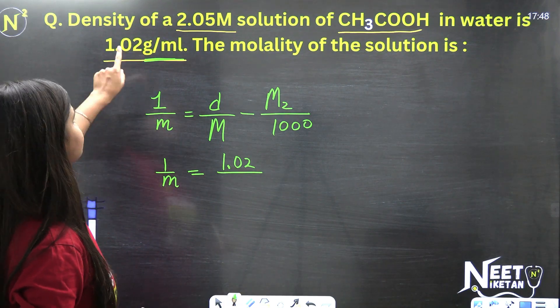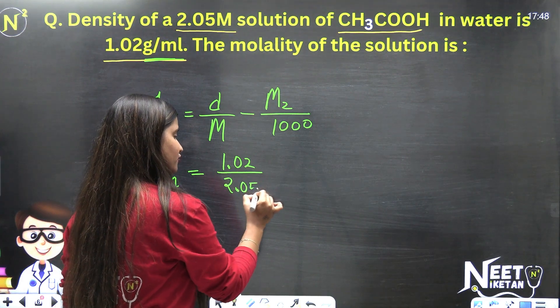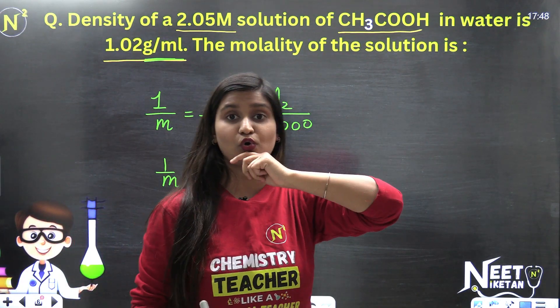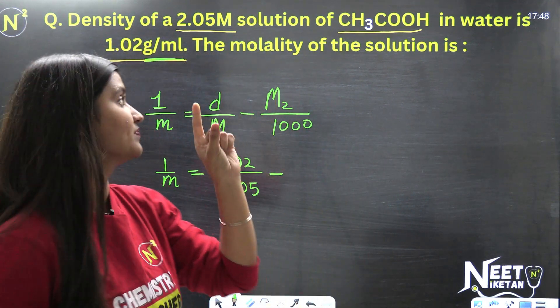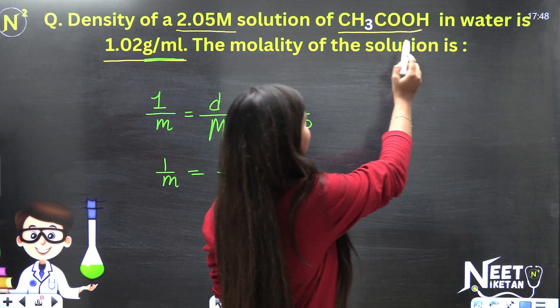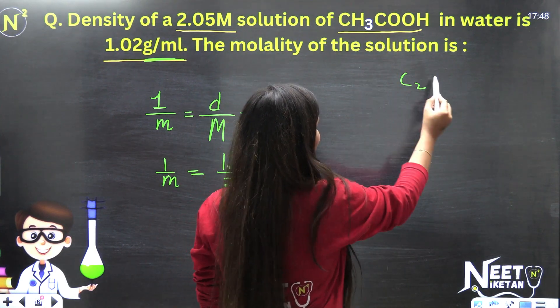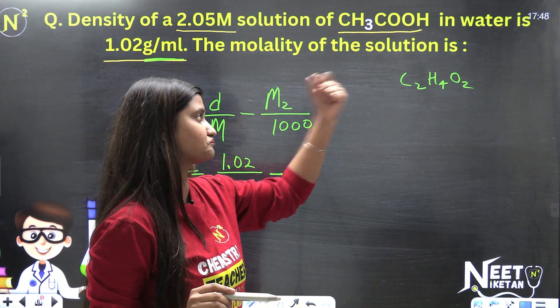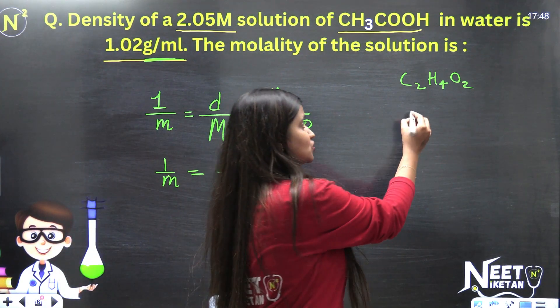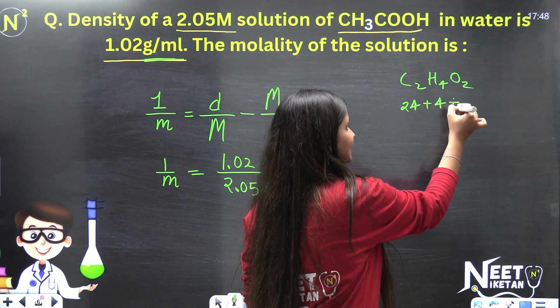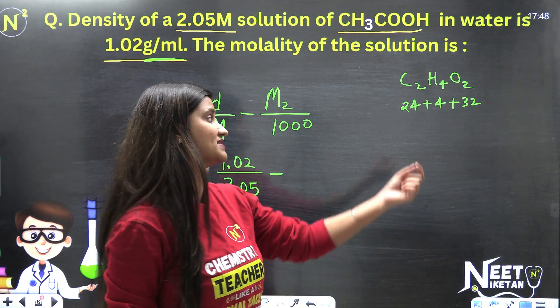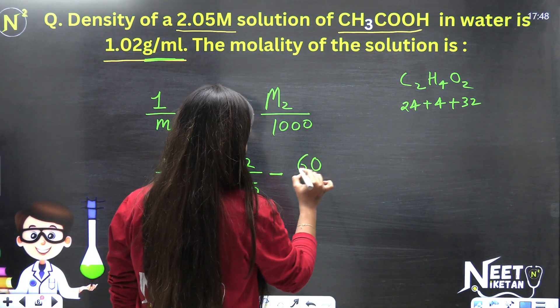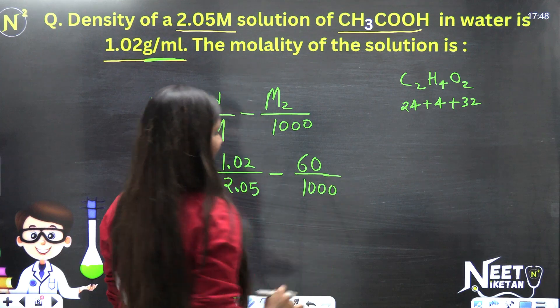You can say one by molality equals density by molarity minus molecular mass of the solute over 1000. In this, our density must be in grams per ml. We discussed this in the previous session also. You have to find molality from here, and you have rest of the components. Density is given as 1.02 grams per ml. Molarity is given as 2.05. CH3COOH is our solute. Its molecular mass - C2H4O2 - this is 24 plus 4 plus 32, which is 28 plus 32, which is 60, over 1000. Now you just have to solve this fraction and reciprocal it, and then you will get your molality.